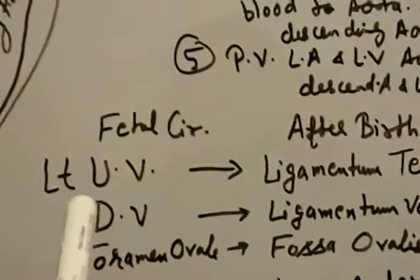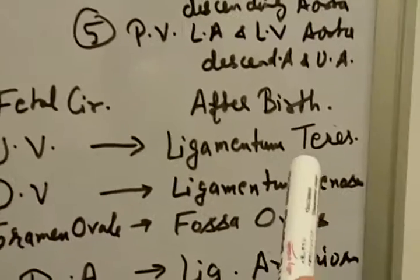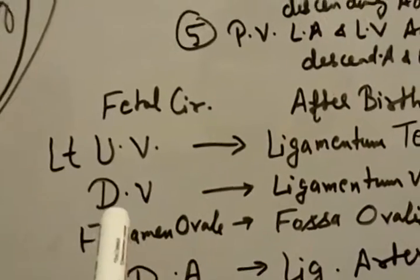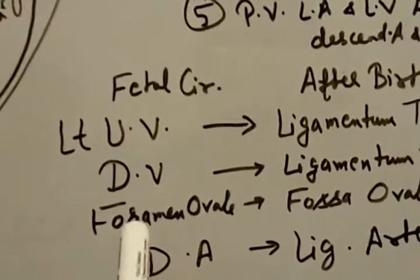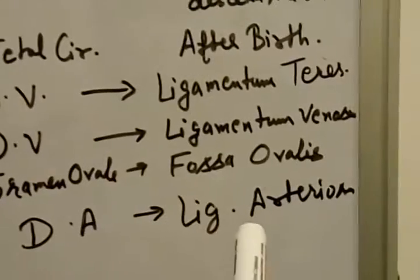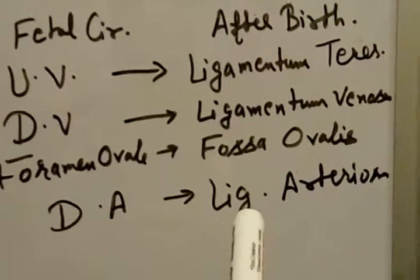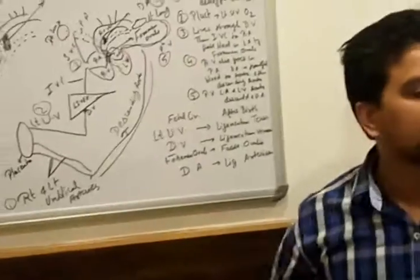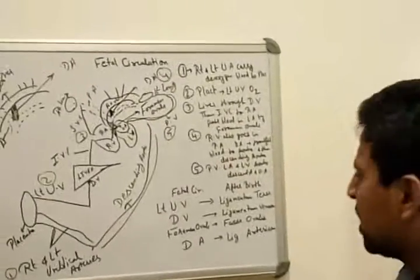See again. Left umbilical vein changes into ligamentum teres. Ductus venosus changes into ligamentum venosum. Foramen ovale changes into fossa ovalis. Ductus arteriosus changes into ligamentum arteriosum. I hope you all understand and remember this.